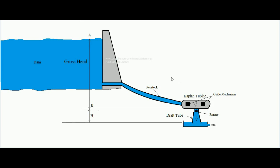Hello students, today we will learn what a Kaplan turbine is, how it works, and we will also derive some mathematical expressions in regards to the Kaplan turbine. A Kaplan turbine is a hydraulic turbine used for converting the hydraulic energy of water into rotational power over a shaft. That rotational power in turn is used for driving a generator set to develop electrical power.